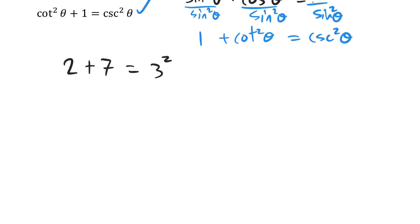Is this a true statement? How would you know? How would you justify that this is a true statement? Most of you would agree: yes, 2 plus 7 is the same as 3 squared. What you could do is draw a line down the middle and work on the arithmetic on each side. 2 plus 7 — we know that's going to be 9.